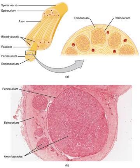A nerve is an enclosed, cable-like bundle of nerve fibers called axons in the peripheral nervous system. A nerve provides a common pathway for the electrochemical nerve impulses called action potentials that are transmitted along each of the axons to peripheral organs, or in the case of sensory nerves, from the periphery back to the central nervous system.